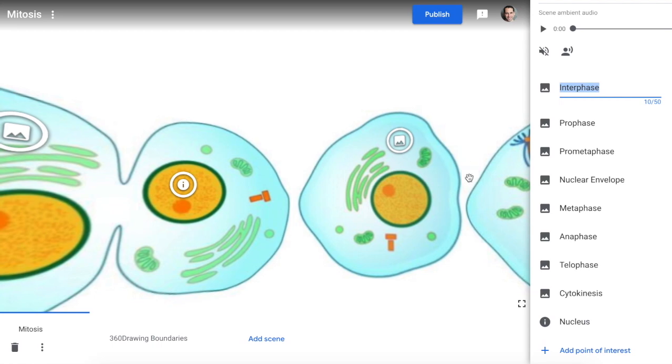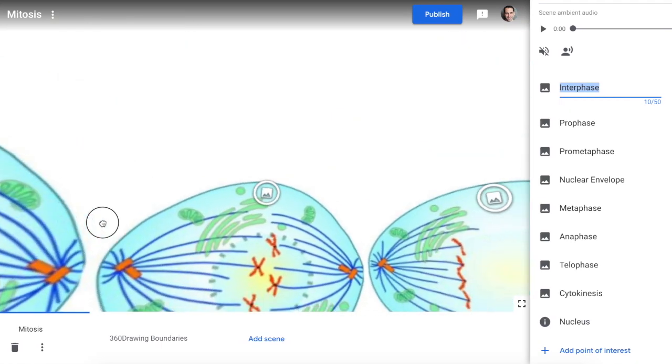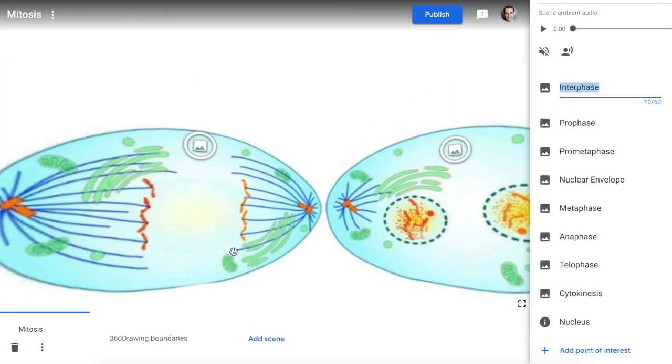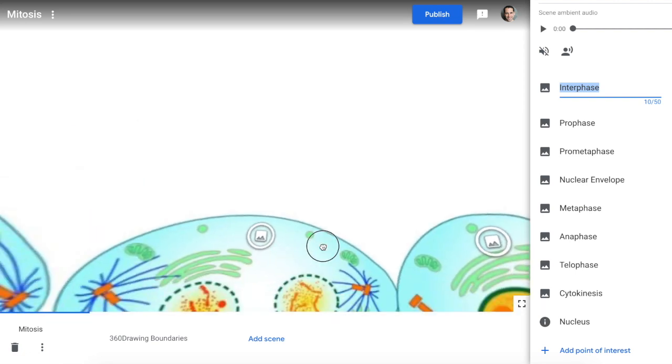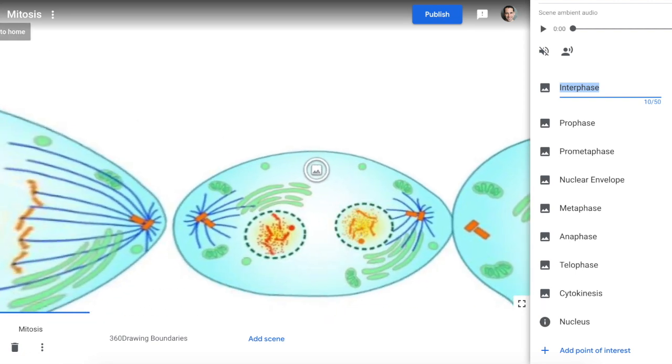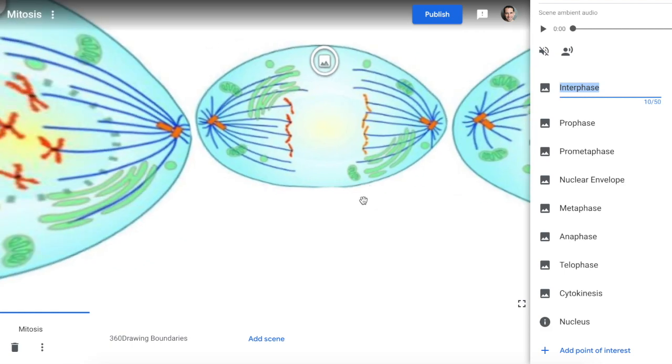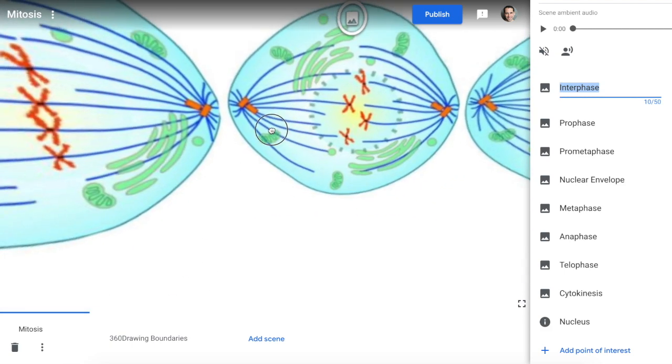They can play with this to create their own 360 tours that they can take a look at inside of a 360 Google Cardboard view of some sort. And this is Tour Creator for creating drawings. Really cool.